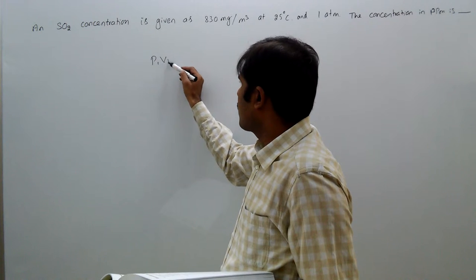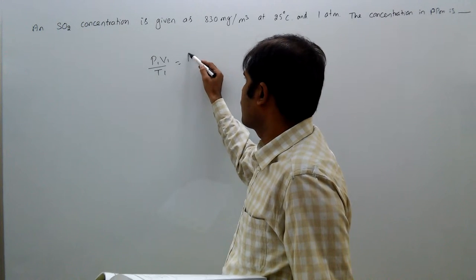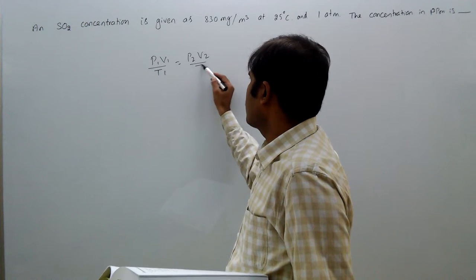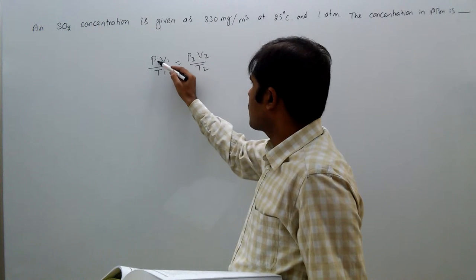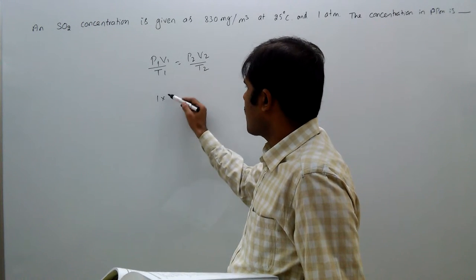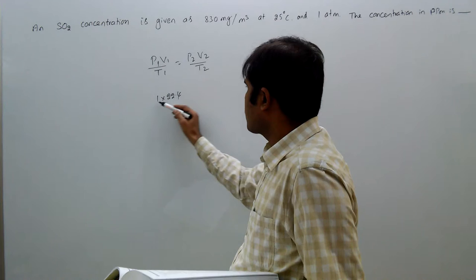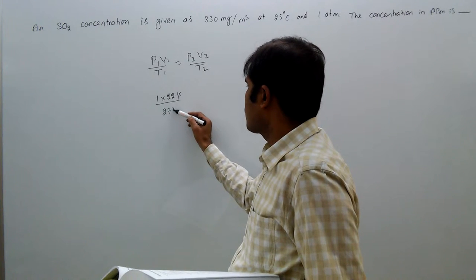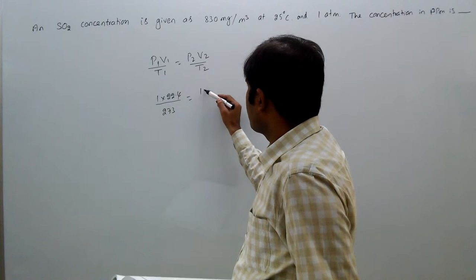p1 v1 by t1 equal to p2 v2 by t2. p1 standard atmosphere 1, standard volume equal to 22.4 liters, t1 273 kelvin equal to p2 1 atmosphere.